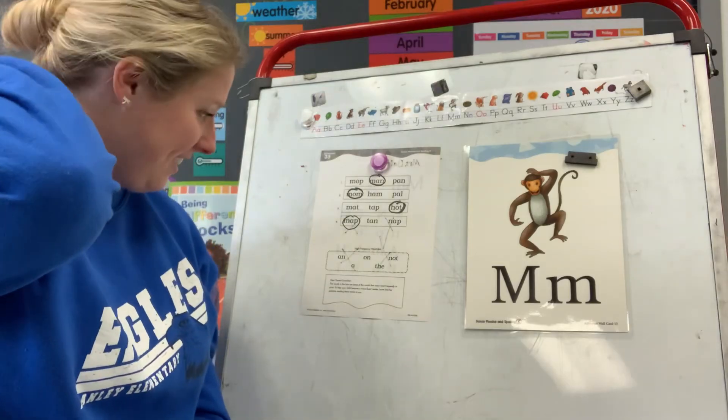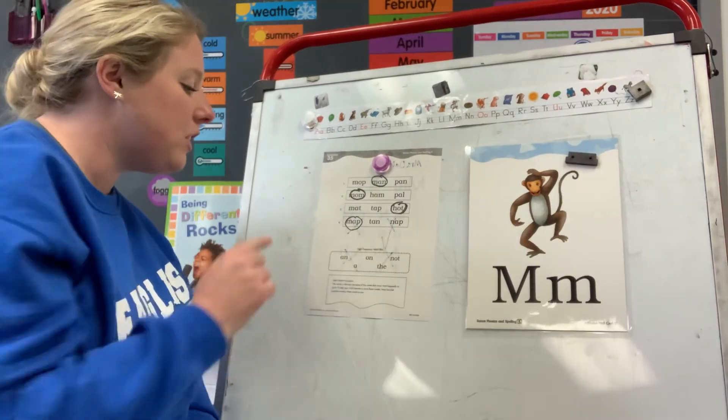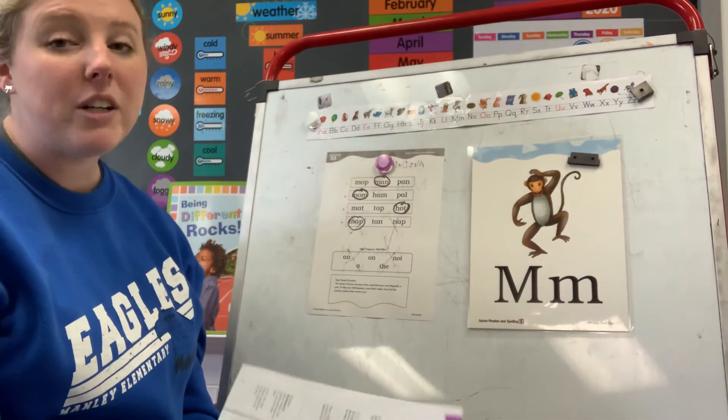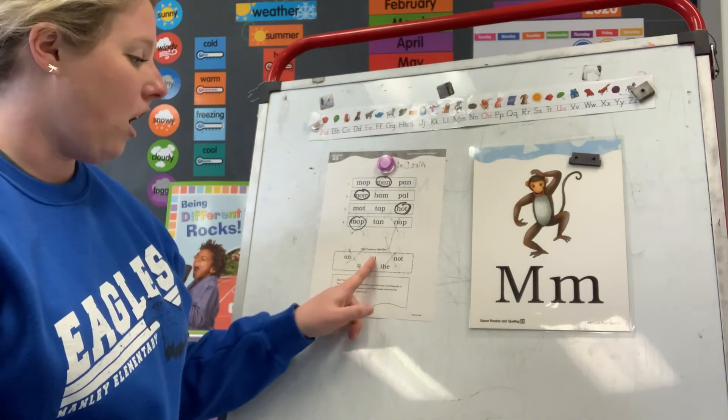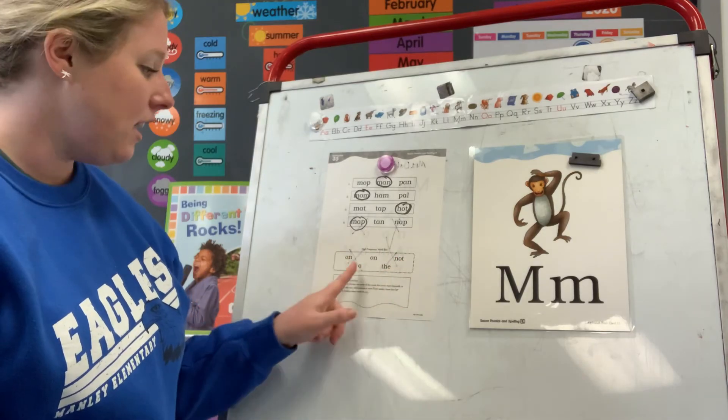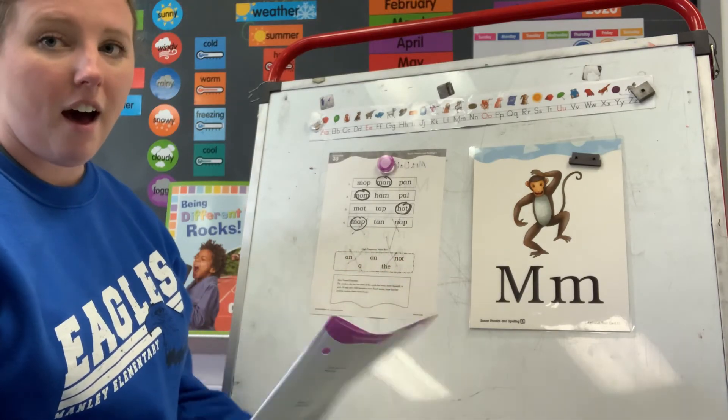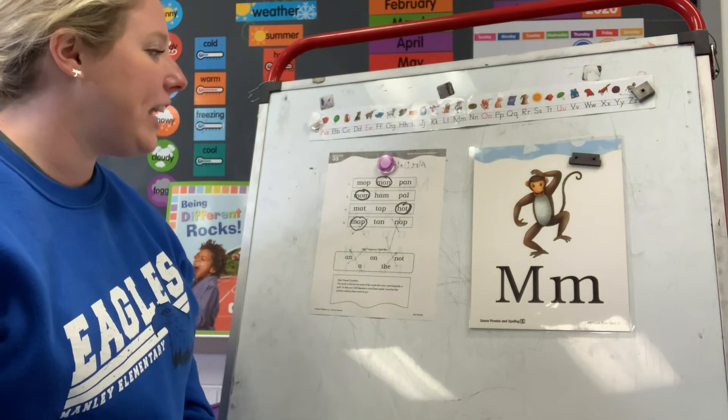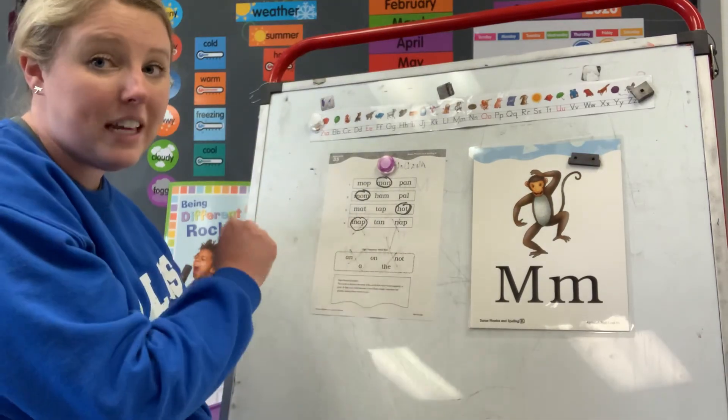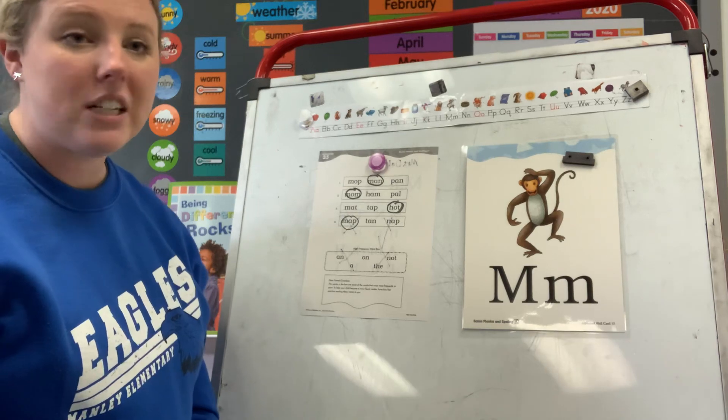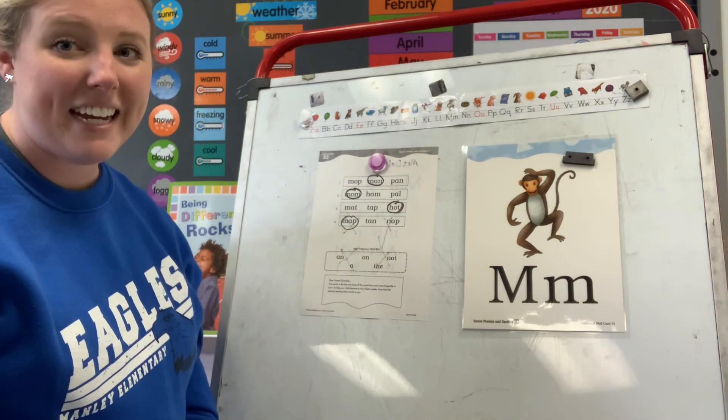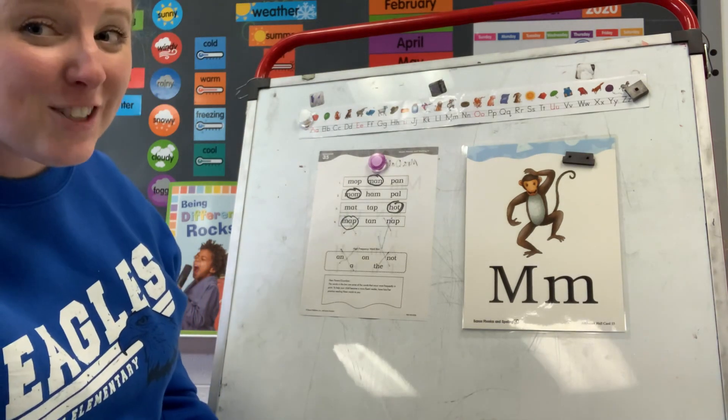All right, let's look at your words in your dotted box. Say these words with me and then I want you to say them to someone at home. Ready? An, on, not, a, the. Good job, my friends. Now, after you tell someone these words, take a picture of this side and the front side of your worksheet so I can see your awesome work that you did. I'll see you later, boys and girls. Good job today. Bye-bye.